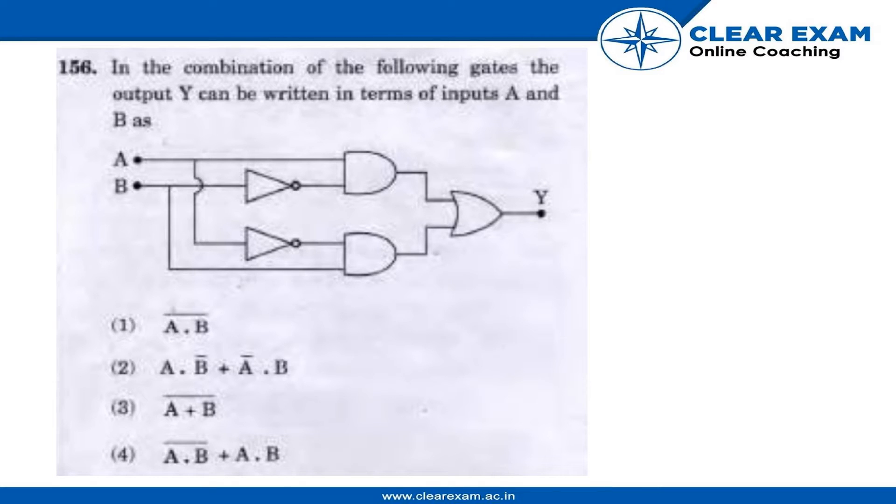Hello everyone, now we are going to do this question which is on the combination of the following gates. The output Y can be written in terms of input A and B. So A and B are the two inputs in the given figure as you can see, and Y is the output. Using the different combinations given, we have to find the value of Y.